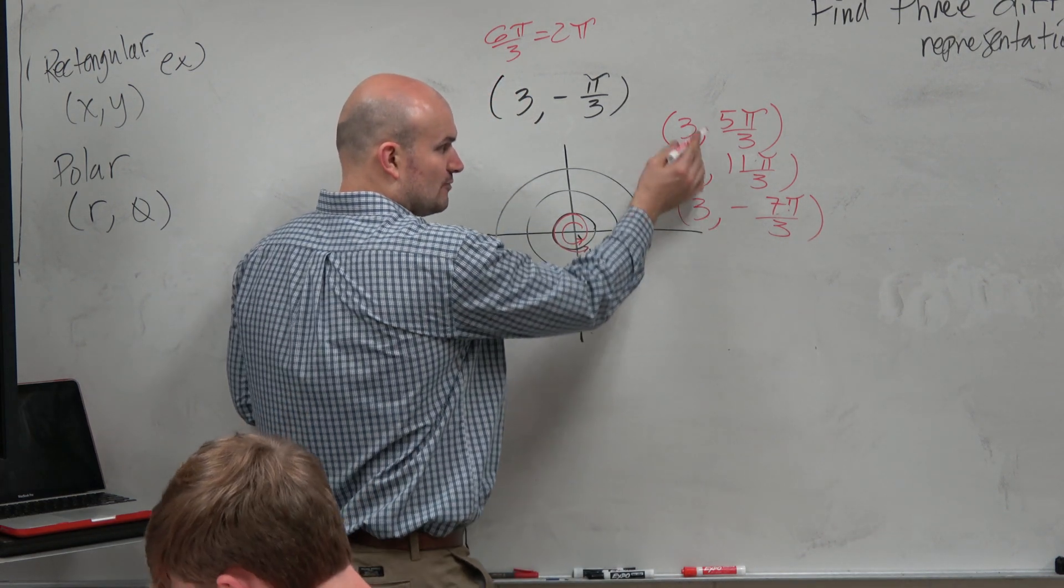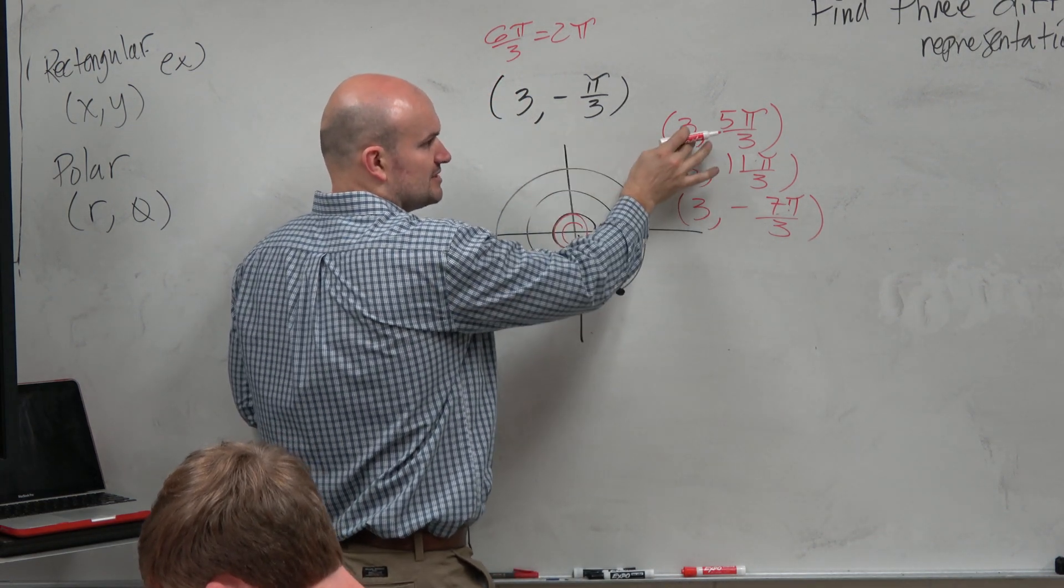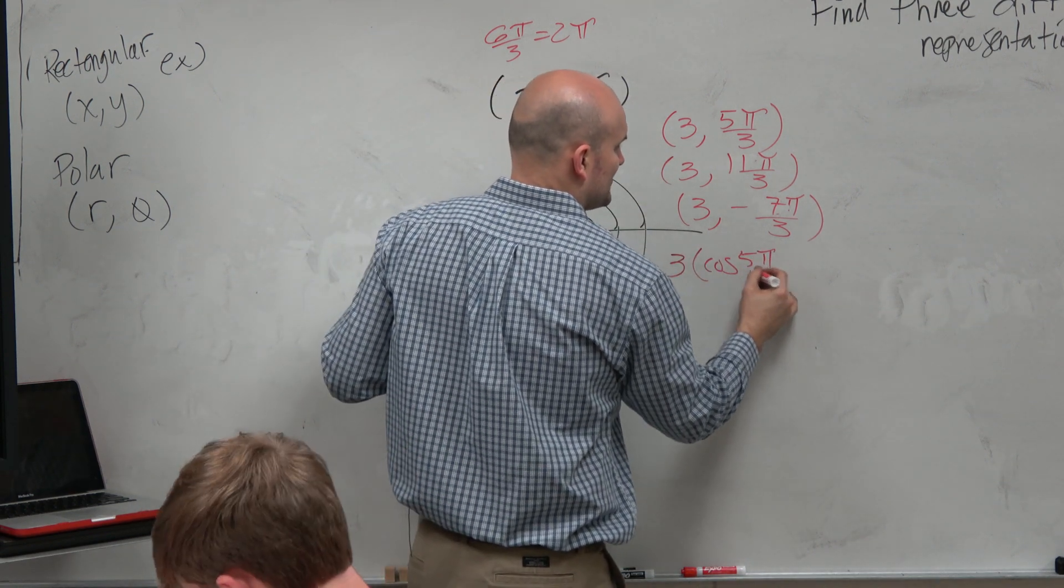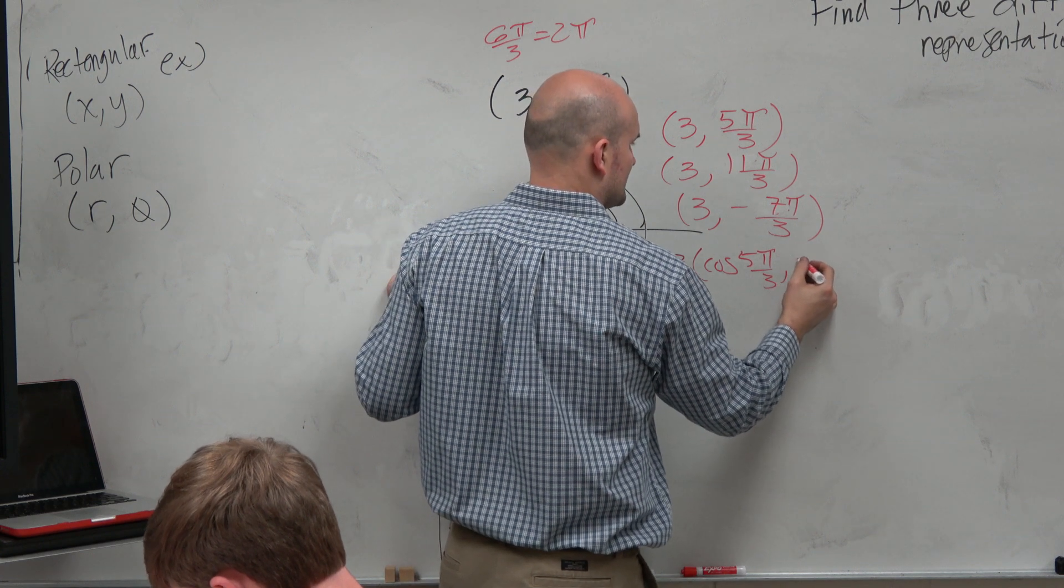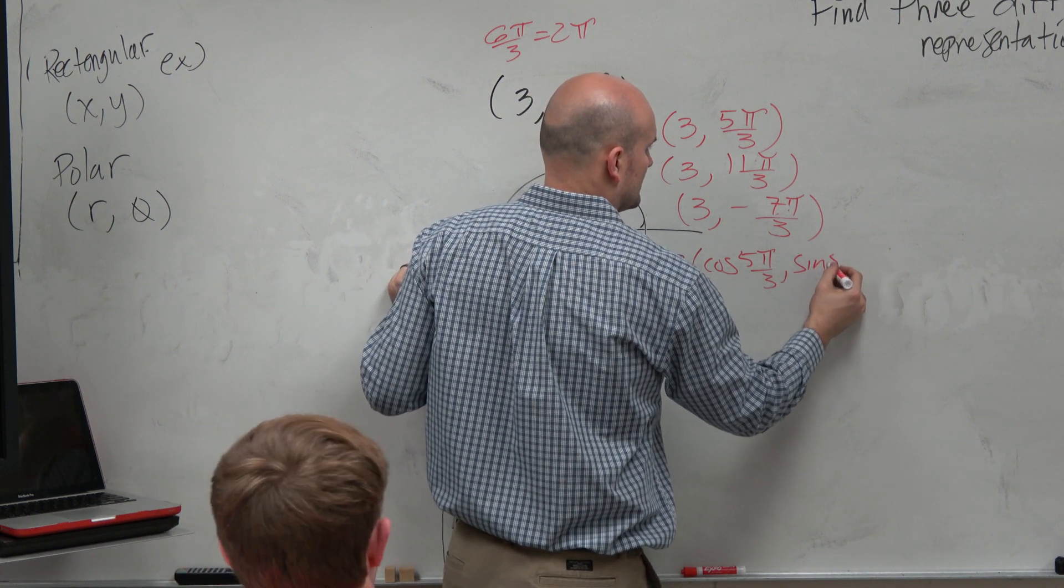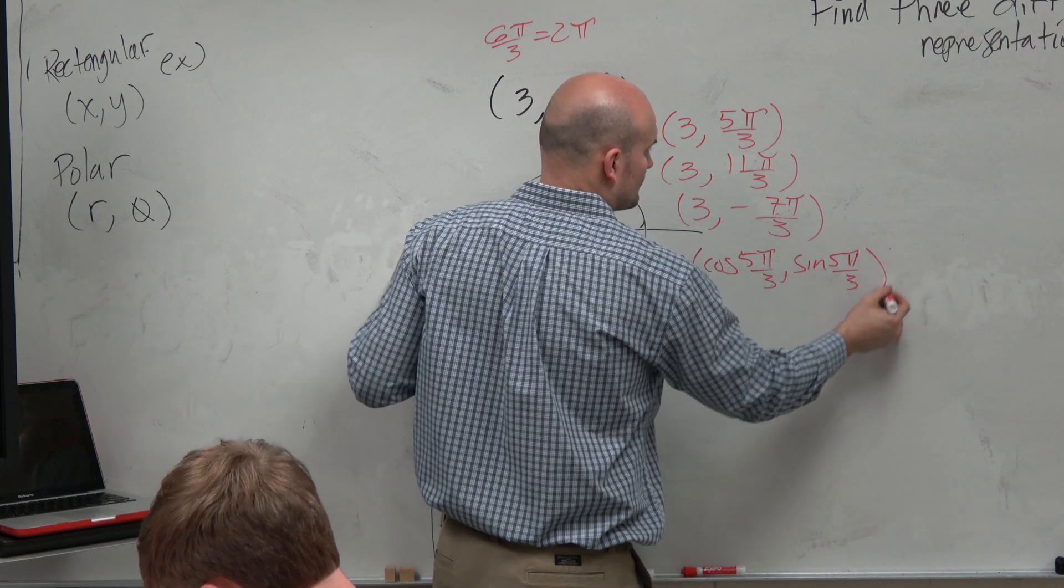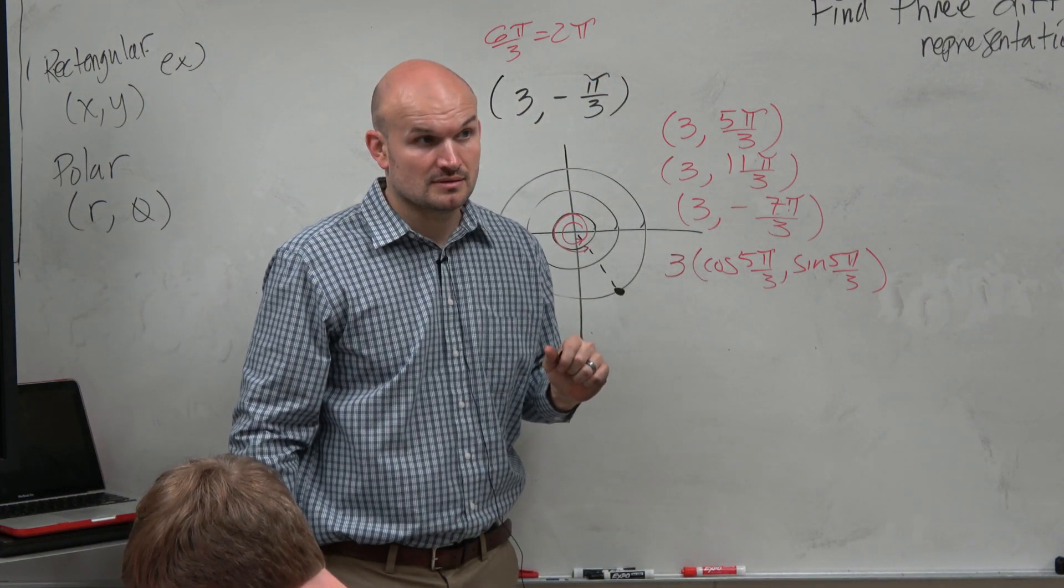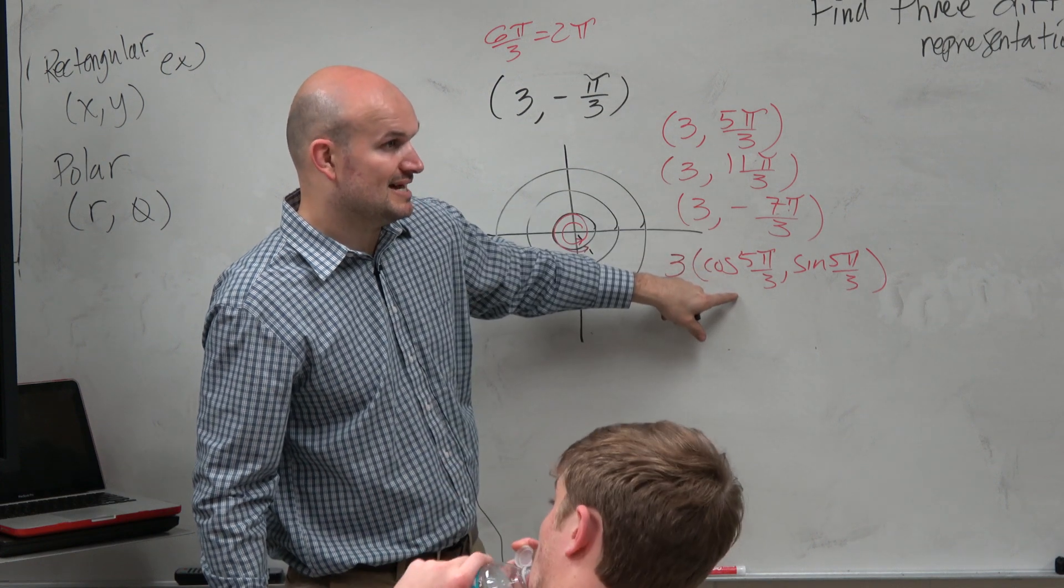So again, think about this. We could rewrite this problem, let's redo this one, as 3 times the cosine of 5 pi over 3 sine of pi over 3. So if we wanted to write this in rectangular form, we could write it like this. Correct?